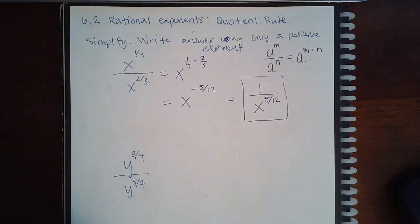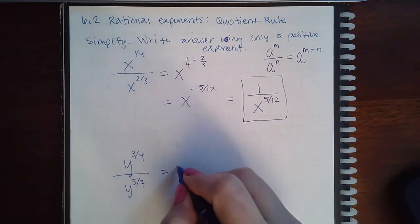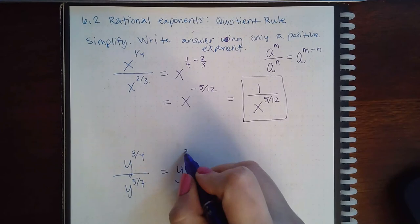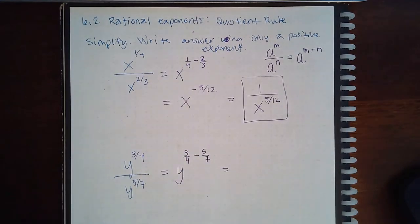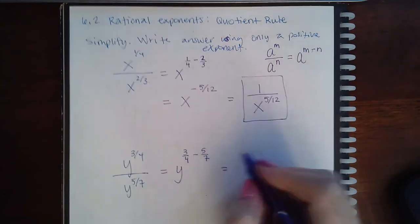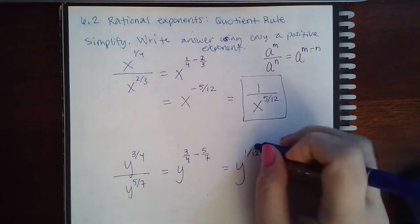Now I have another one. So here we're going to apply the same thing, they are the same base. So I keep the same base, but then I'm going to have the top exponent minus the bottom exponent. So 3 fourths minus 5 sevenths, calculator tells me I get 1 over 28.